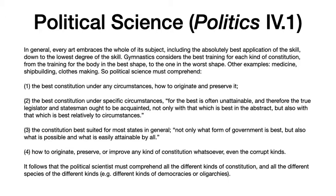Similarly, political science must comprehend all of the following. Number one, the best constitution under any circumstances. Number two, the best constitution under specific circumstances — for as Aristotle points out, the best is often unattainable, and therefore the true legislator and statesman ought to be acquainted not only with that which is best in the abstract, but also that which is best relative to the circumstances. Third, the political scientist must comprehend the constitution best suited for most states in general: not only what form of government is best, but also what is possible and what is easily attainable by all. And fourth, political science must comprehend how to originate, preserve, or improve any kind of constitution whatsoever, including the corrupt kinds — so how to originate and preserve a kingship, aristocracy, constitutional government, but also how to originate and preserve a tyranny, oligarchy, democracy, etc.